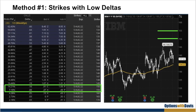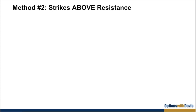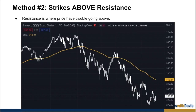If we want strikes that have a very low chance of being in the money at expiration, then we want to look at the $150 and the $155 strike — much further away than the 30-delta strike at 144. Ideally, we want to choose a strike that is as far away as possible but still gives us some premium, and preferably above some sort of resistance. That is the second method for choosing covered call strikes that don't get assigned: choose strikes that are above resistance.